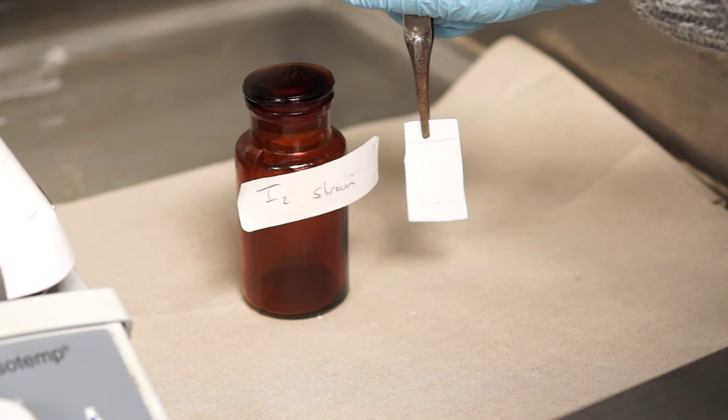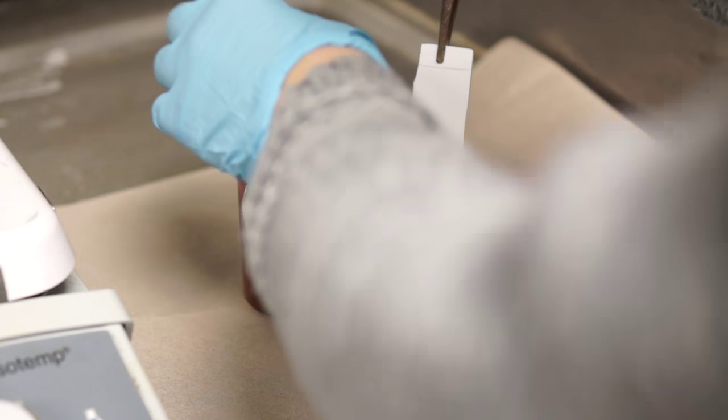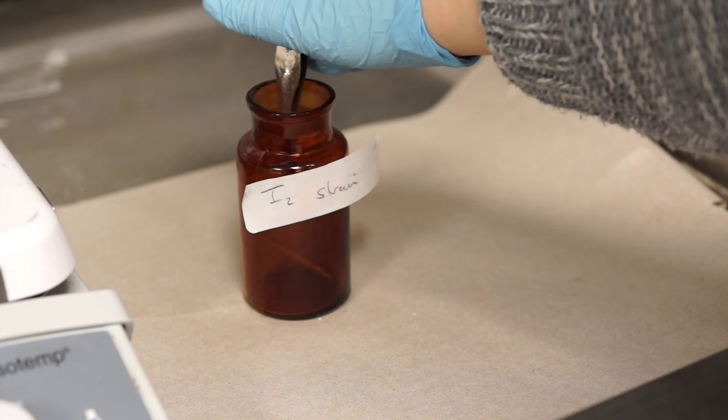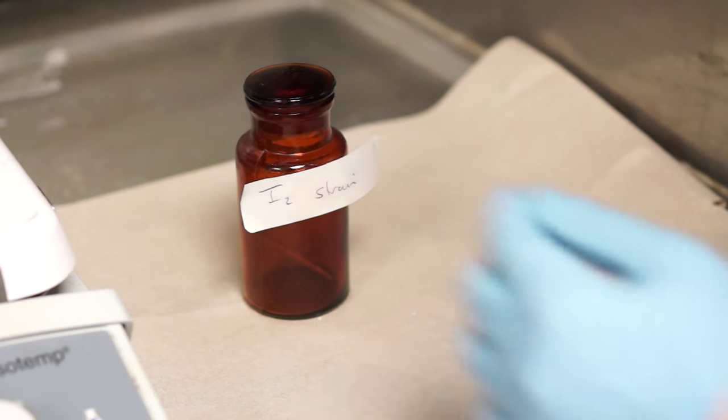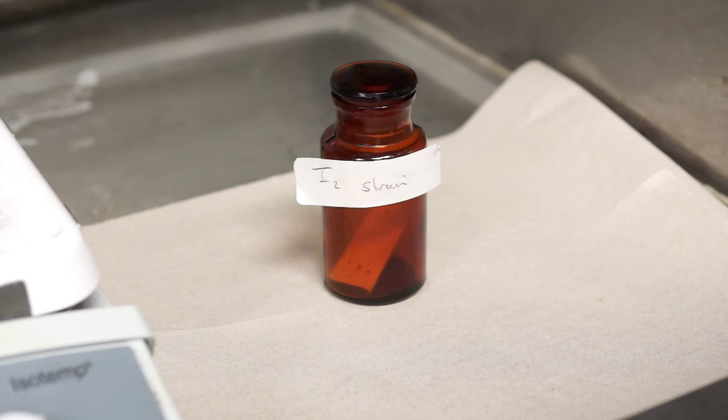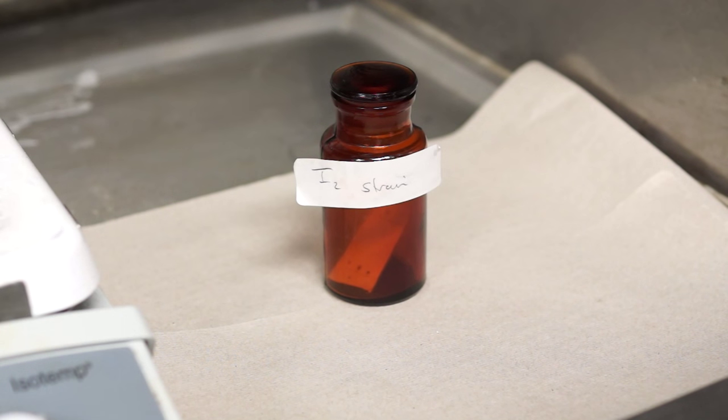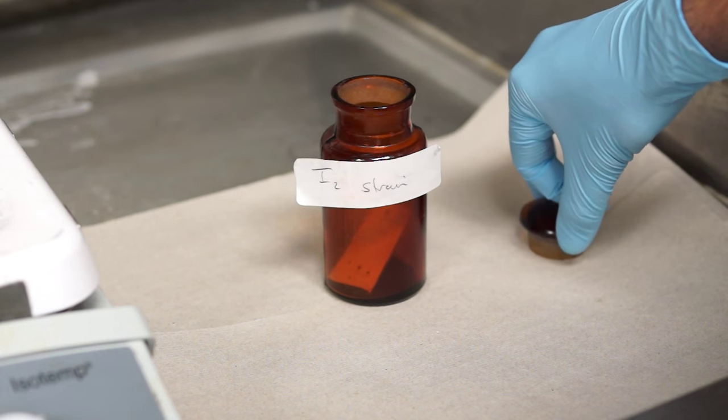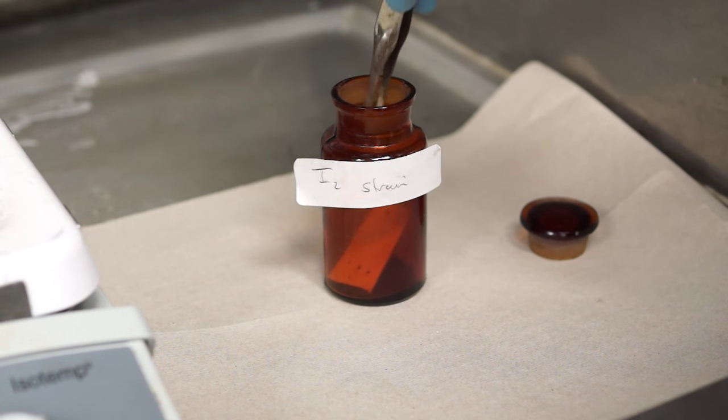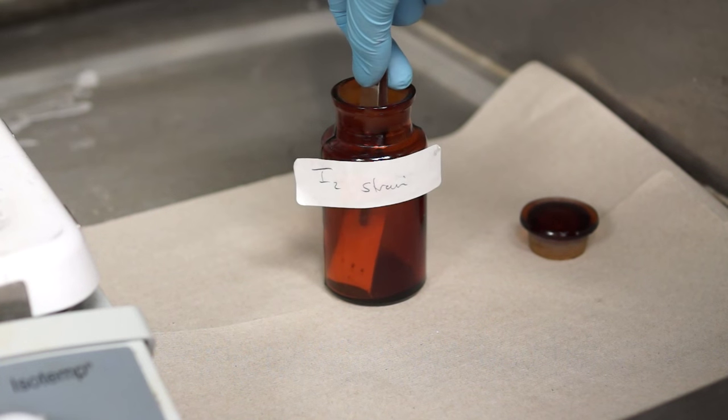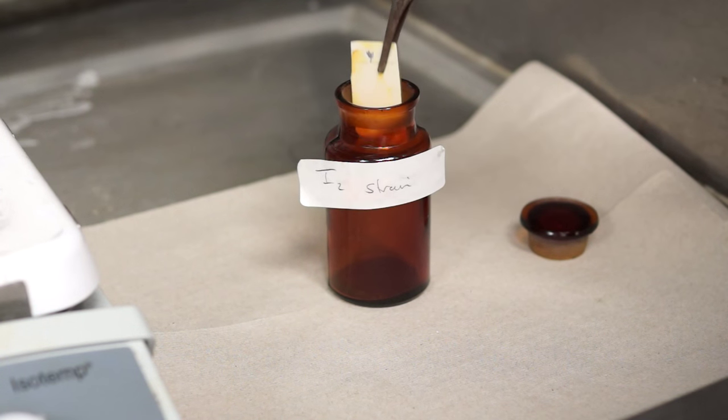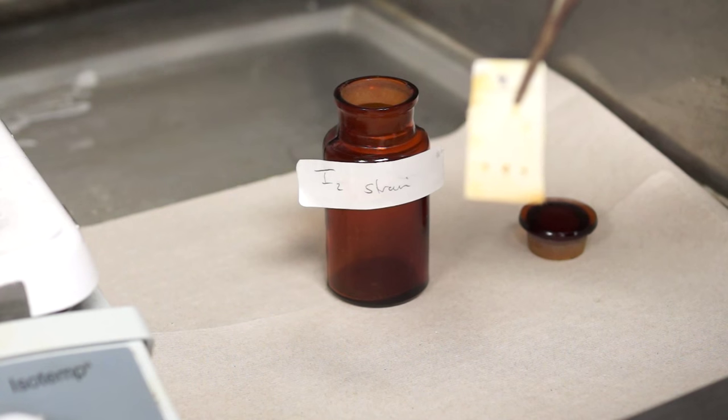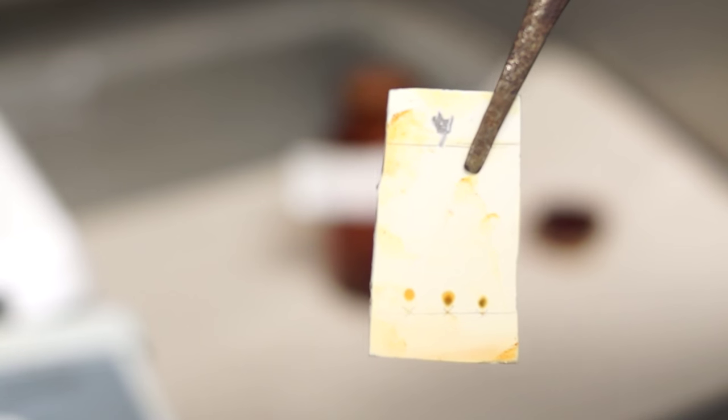To stain with iodine, take your TLC plate and carefully place it into a bottle of iodine stain. After a few minutes, when the TLC plate has changed color, carefully remove the cap of the bottle and pull out your stained TLC plate. You can observe that the spots may have changed color due to the iodine stain.